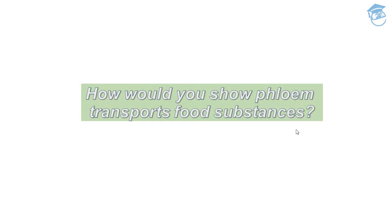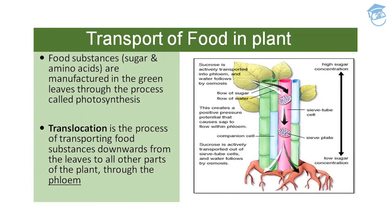I have already taught you about the phloem loading and unloading at source and sink respectively in the previous section of the presentation, so you can refer to that for better understanding. How would you show that phloem transports food substances? A very simple experiment called girdling was used to identify the tissue through which food is transported. We will be doing three experiments for this.